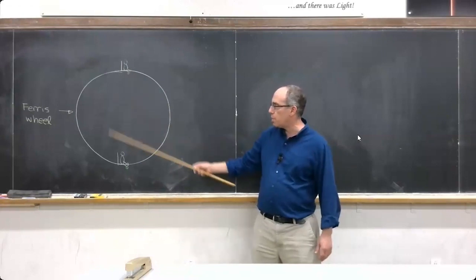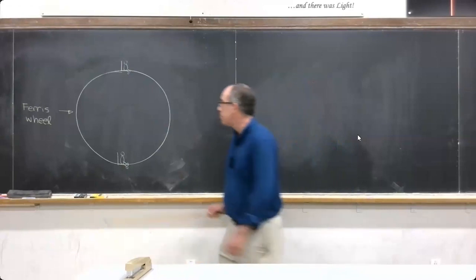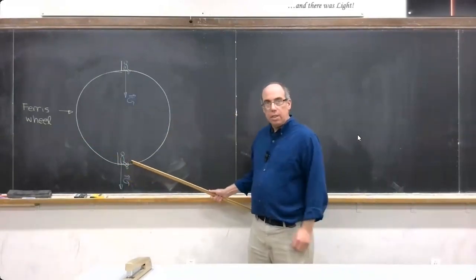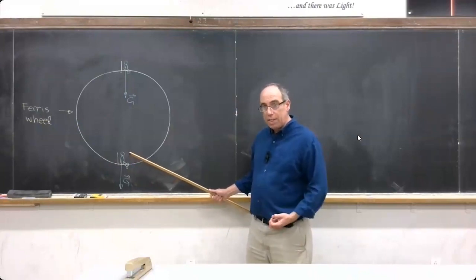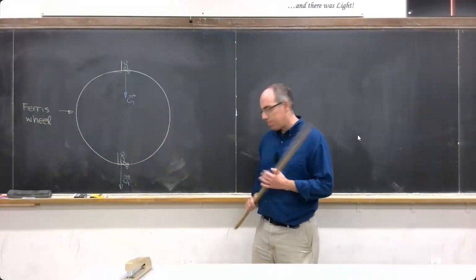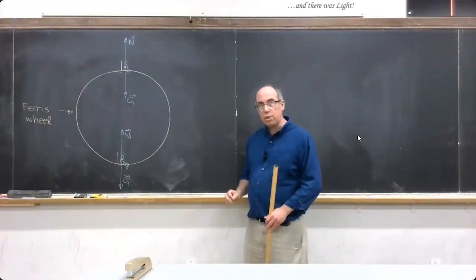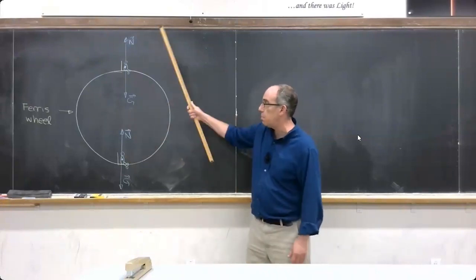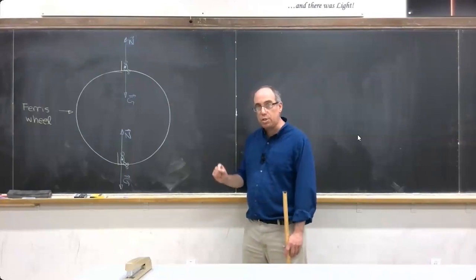For both positions, we have a gravitational force pointing down, and also for both positions, we have a normal force that the seat exerts on the rider pointing upward. In the force diagrams that I drew, I drew the normal force vectors the same length, but are those normal force vectors really equally strong?